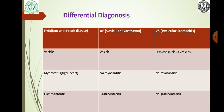In FMD, vesicles are present and myocarditis is present. In vesicular exanthema, vesicles are present but no myocarditis. In vesicular stomatitis, vesicles are less conspicuous and there is no myocarditis. In FMD, gastroenteritis is present. In vesicular exanthema, gastroenteritis is also present. But in vesicular stomatitis, there is no gastroenteritis.